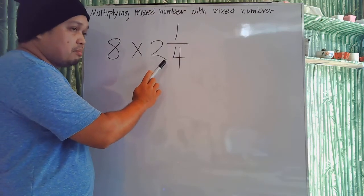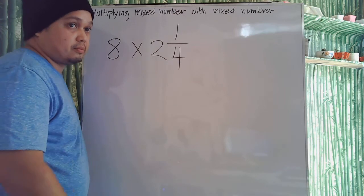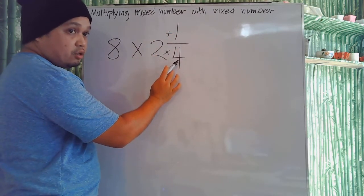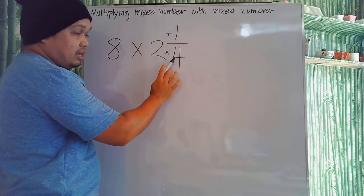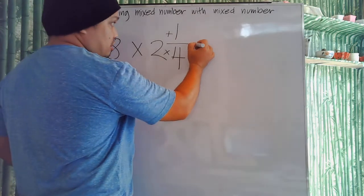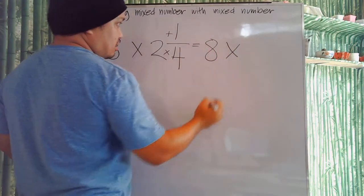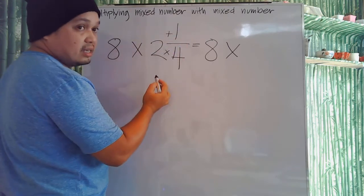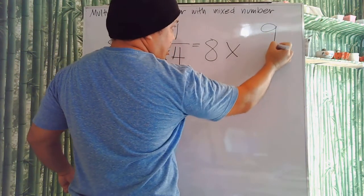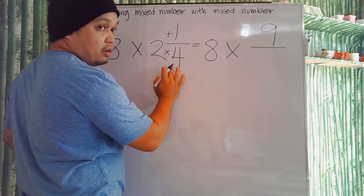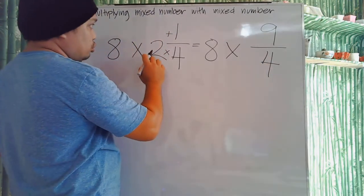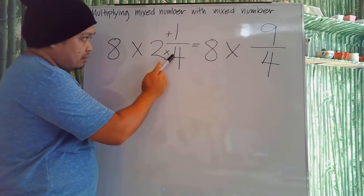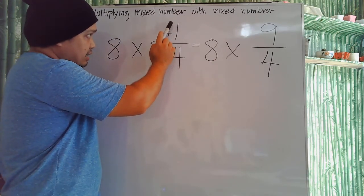To change the mixed number into an improper fraction, multiply the denominator by the whole number, then add the numerator, keeping the same denominator. So 4 times 2 is 8, and 8 plus 1 is 9, giving us 9 over 4. So 2 and 1 fourth becomes 9 over 4.